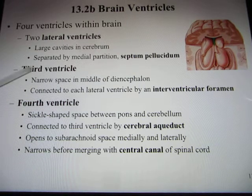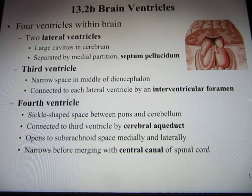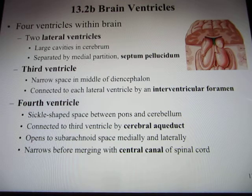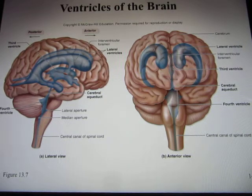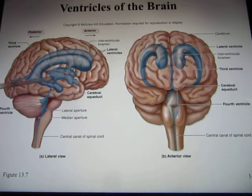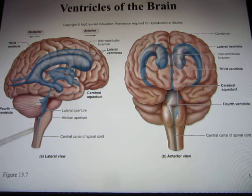The third ventricle is in the diencephalon area. From there, fluid flows down through the cerebral aqueduct to the fourth ventricle, which is located between the cerebellum and the brain stem. From the fourth ventricle, it travels through the central canal down into the spinal cord. So all four ventricles are connected together.